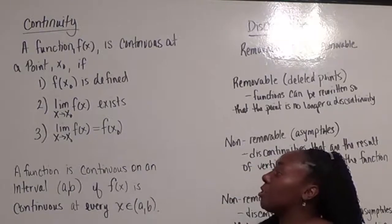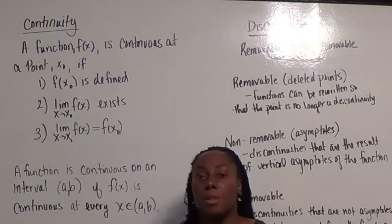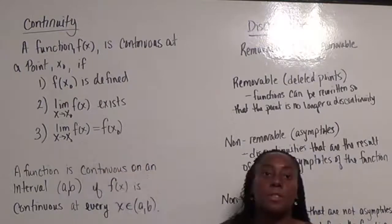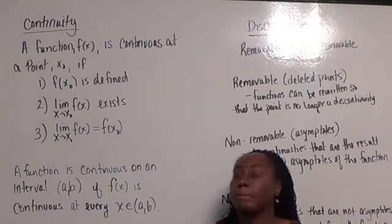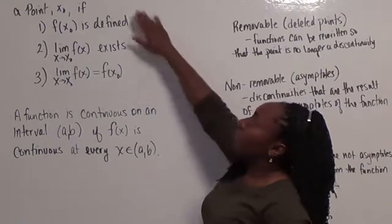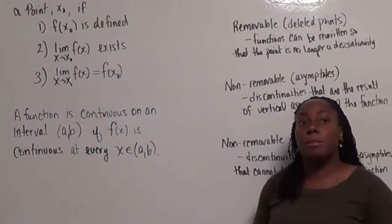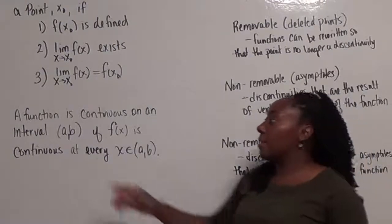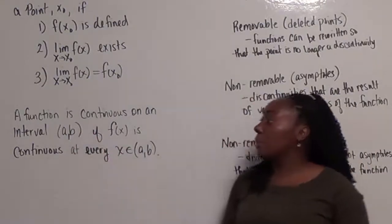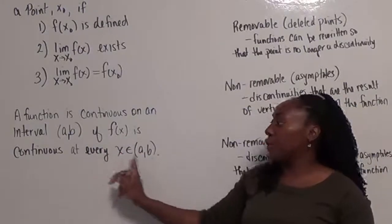The third condition says that the limit as x goes to x0 of f of x equals the function value at that particular point. So if those three conditions hold, the function is continuous at that particular point. And we can expand that to say a function is continuous on an interval if f of x is continuous at every point within the interval.